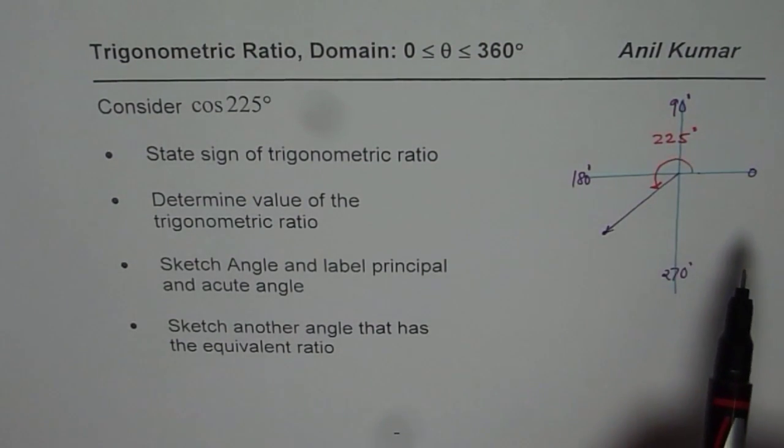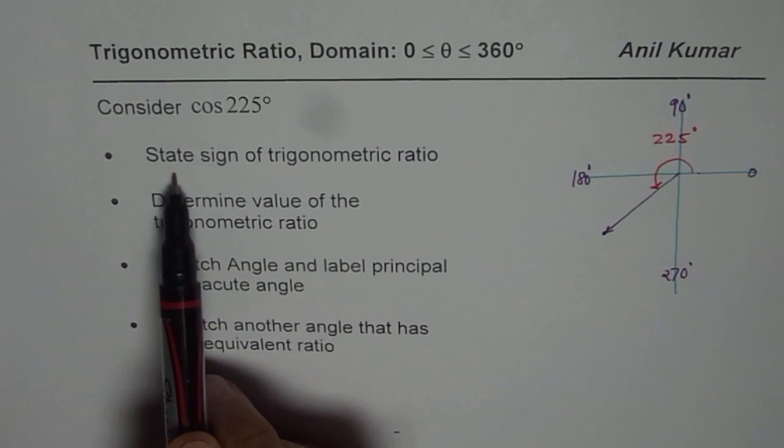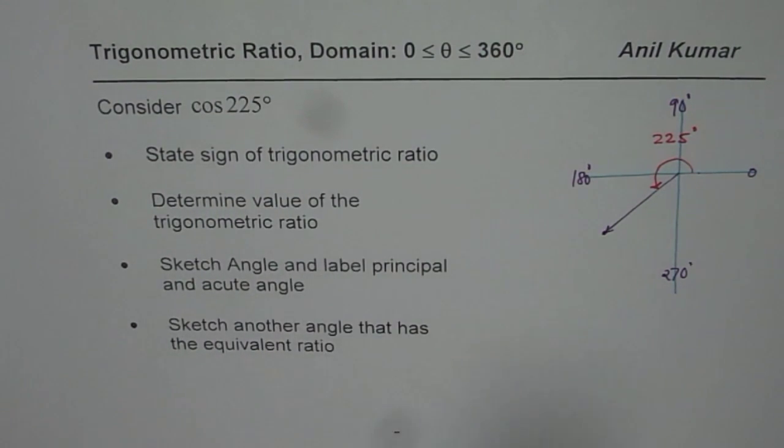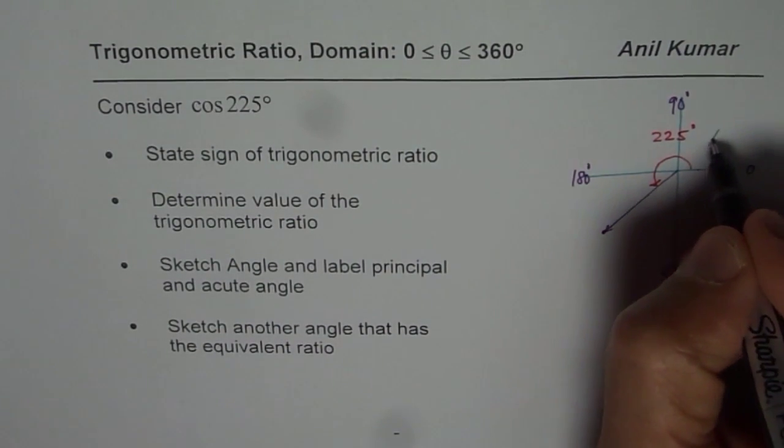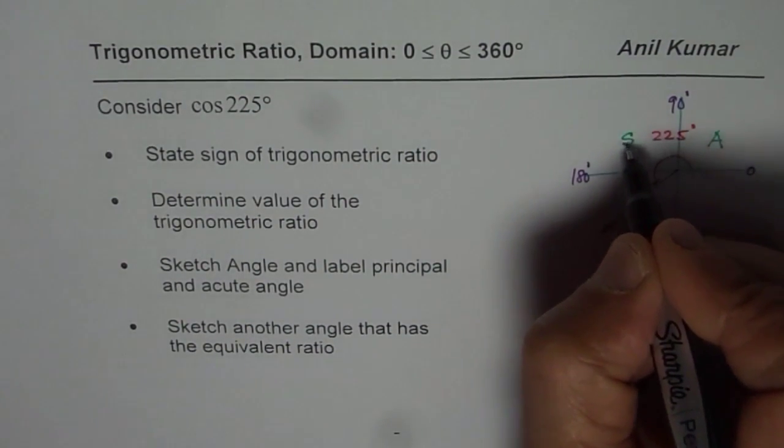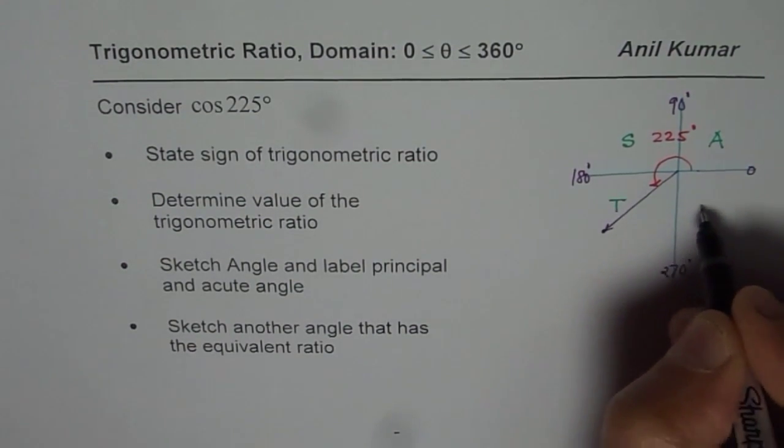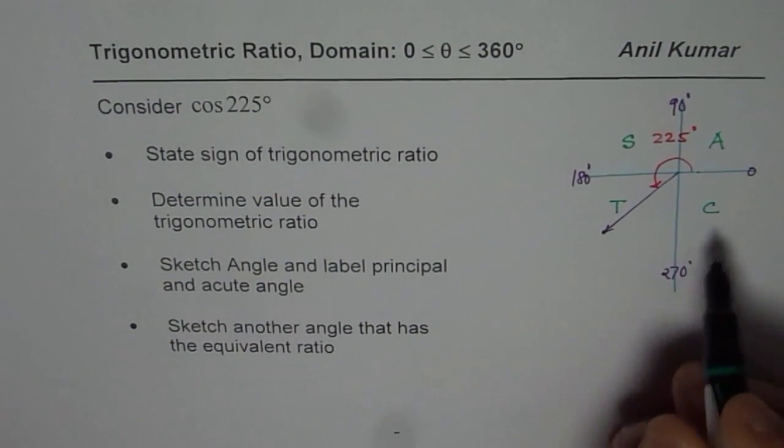Now, let us answer the questions. First one is state sign of trigonometric ratio. As far as the signs are concerned, you know, all are positive in quadrant 1, sine is positive in quadrant 2, tan in 3,